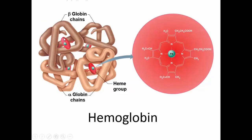Hemoglobin is a conjugated protein — a protein attached to something else — and it shows quaternary structure. It has two alpha-globin chains and two beta-globin chains, so there are four protein molecules. Each one of those chains is associated with a heme, which is the iron-containing portion. This is the structure that can bind to oxygen and carbon dioxide.